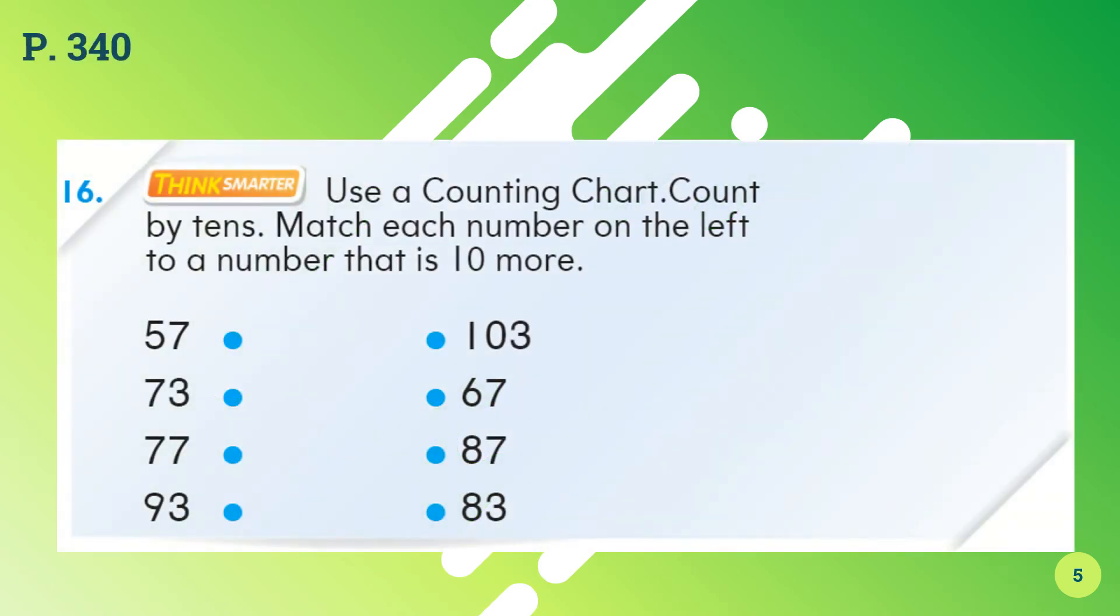On the same page 340, let's look at question 16. This is a think smarter question. Now use a counting chart, count by 10s. Match each number on the left to a number that is 10 more. Starting from 57, add 10 more to 57. What will you get? You should get 67. So you're going to draw a line from 57 and connect it to the number 67 on your right.